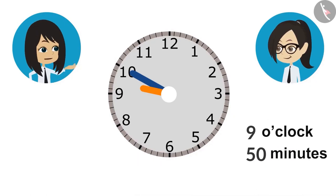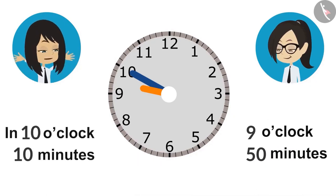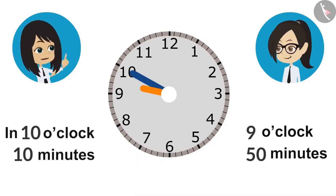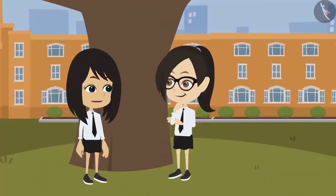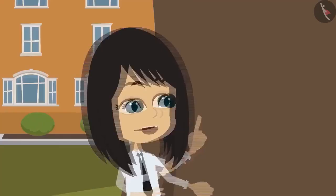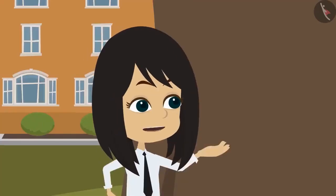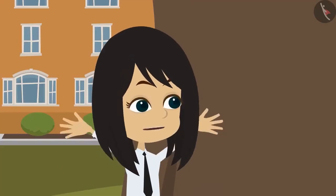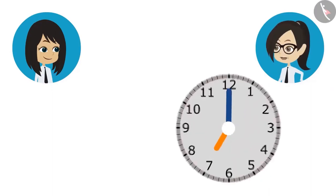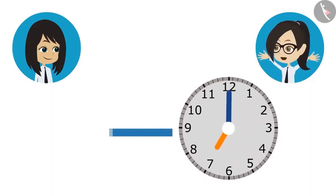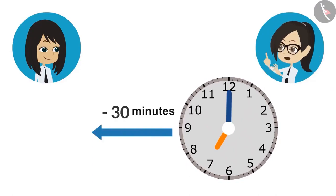We can also say the class will end 10 minutes to 10 o'clock. Now tell me: to come to the amusement park tomorrow, we have to reach school at 7 o'clock in the morning. If we take 30 minutes from home to reach school, then what time do we have to leave from home? For this, first we will draw 7 o'clock in the clock. After that, we will reduce the time it will take to go from home to school.